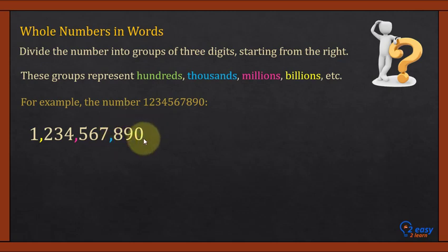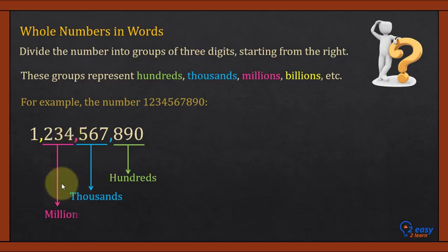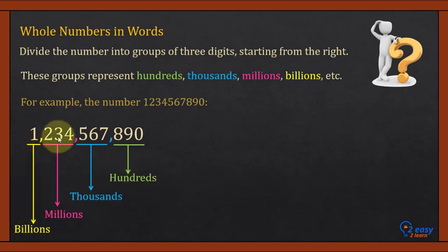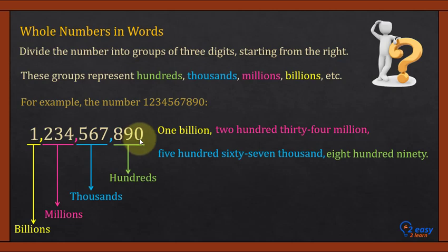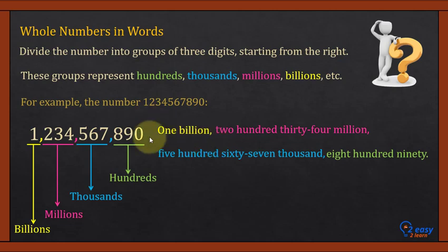The extreme right group is the hundreds group, the next one is the thousands group, the next is the millions group, and the last one is the billions group. To write the number in words, divide into three-digit groups starting from the extreme right, place a comma after each three digits, name those groups — hundreds, thousands, millions, billions — and use these group names to write the number in word form.